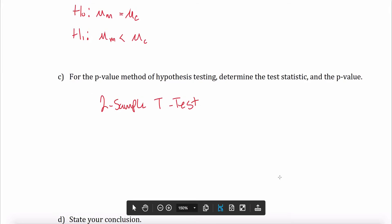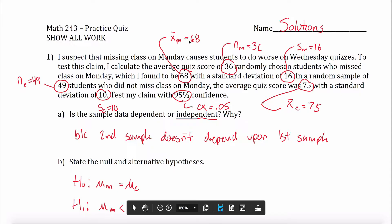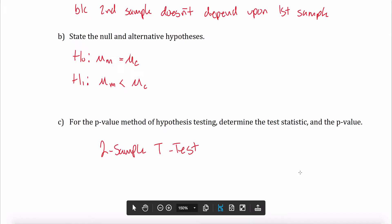So I'm going to enter all those statistics. It asks me for x1-bar. Maybe I'll make my group 1 the group that missed class. So that would be 68. S1 or Sx1 would be my 16. N1 would be my 36. X-bar 2 would be the average for the students who went to class. That's 75. S2 would be the standard deviation for those students, which was 10. And N2 would be 49. My claim is that mu 1 is less than mu 2. So that will be the second of the three choices it gives me. I'm always going to leave my data unpooled in this class. And then I go and hit calculate.